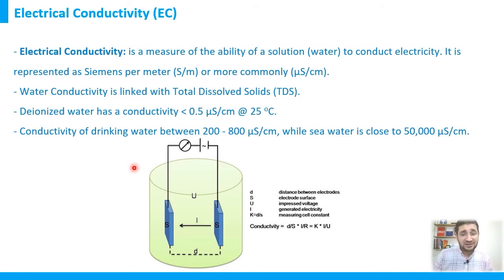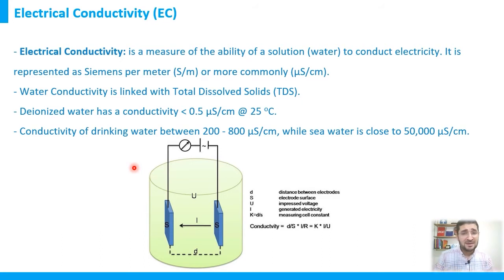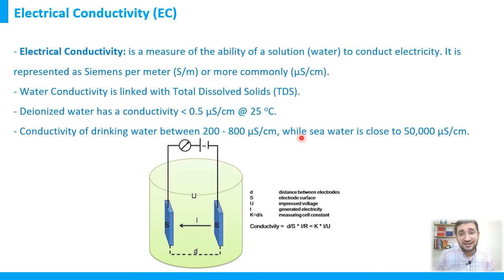Generally, the conductivity of drinking water ranges between 200 to 1000 micro-S per centimeter — in some cases 200 to 500, in others 200 to 800, but a wider range goes up to 1000 micro-S per centimeter maximum. By comparison, seawater conductivity can reach up to 50,000 micro-S per centimeter and beyond.